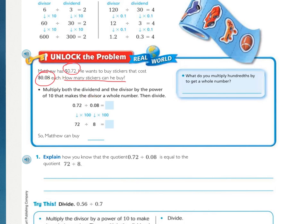Multiply both the dividend and the divisor by the power of 10 that makes the divisor a whole number, then divide. In this case, you'd have to multiply by 100 to move the decimal twice. It has 0.08. They had to move it twice to make that a whole number. They also had to move it twice on the 0.72. 72 divided by 8 equals 9. So Matthew can buy 9 stickers.